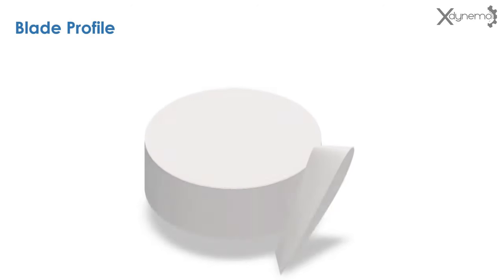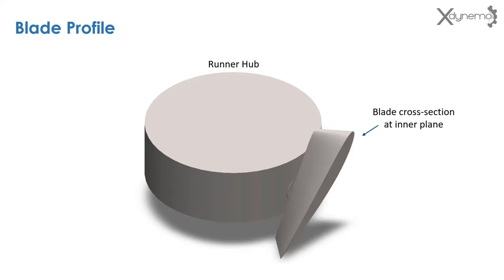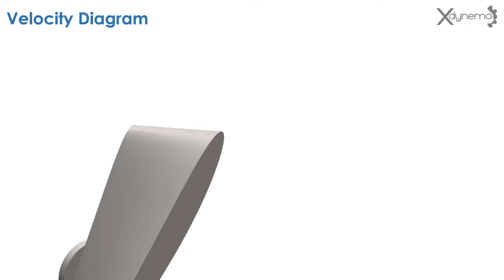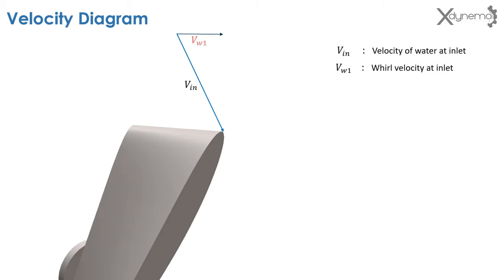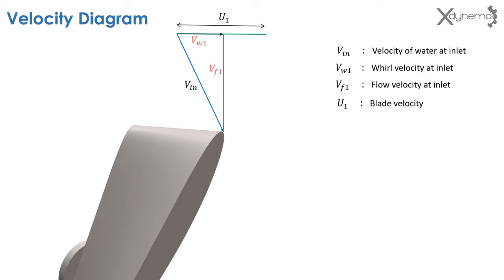Now it's time to discuss about velocity diagrams. To understand velocity diagrams, consider a cross-section of the blade at the inner plane, located at a distance of D1 from the runner axis. Velocity diagram: consider the inlet side of the runner blade. The water enters at an angle due to guide vanes. V_in is the absolute velocity of water at the inlet. Inlet velocity has two components: the tangential component is VW1, which is the whirl velocity at inlet; the vertical component is VF1, which is the flow velocity at inlet. As the blade rotates about the runner axis, U1 is the blade velocity. Due to the rotation of the blade, water enters the turbine blade with a relative velocity of Vr1.